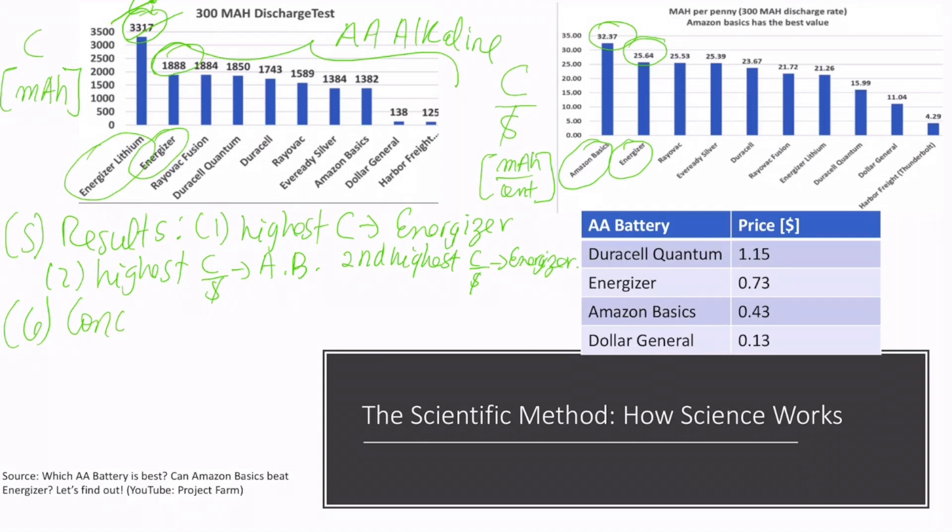The last point of the scientific method is to write the conclusion. But first, let's address our hypothesis. I proposed in the hypothesis that the most expensive battery, in this case the Duracell Quantum at $1.15, would be the most long-lasting battery. But if we look at the capacity per unit value of this one, it's only $15.99, which is about half of the Amazon Basics. So unfortunately this statement is not true. We will have to write that the most expensive battery is not the best. The Duracell Quantum, in this case, is not the best.